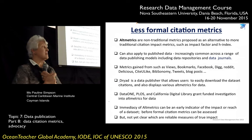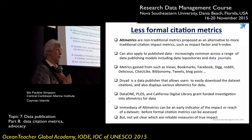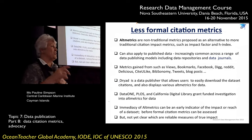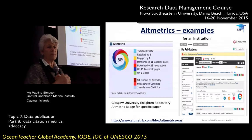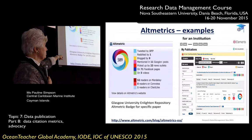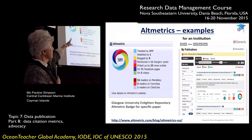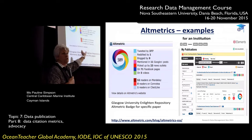The good thing about altmetrics is the immediacy — it's an early indicator of impact. For formal citations, if you publish a paper you probably have to wait a year or two before you get any citation metrics, and that's not quick enough for datasets. So altmetrics is the alternative. The problem is it's not yet clear whether these social media metrics are a good measure of impact or quality. Some examples here: Glasgow University's Enlightenment repository has an altmetric badge that resolves to those metrics, viewable on altmetric.org.